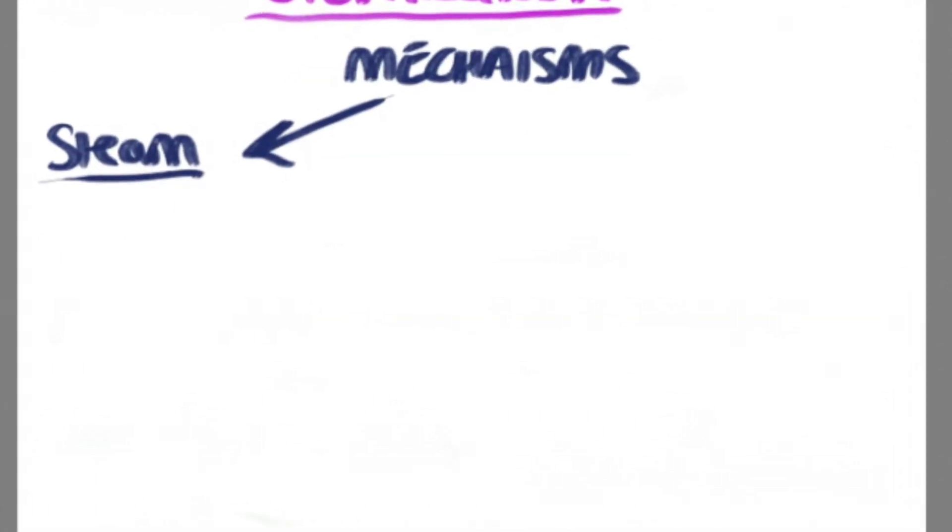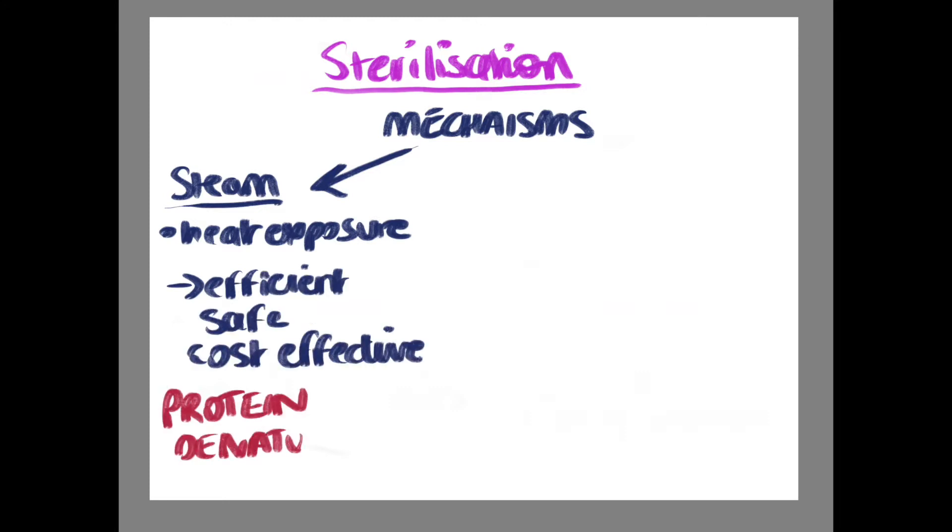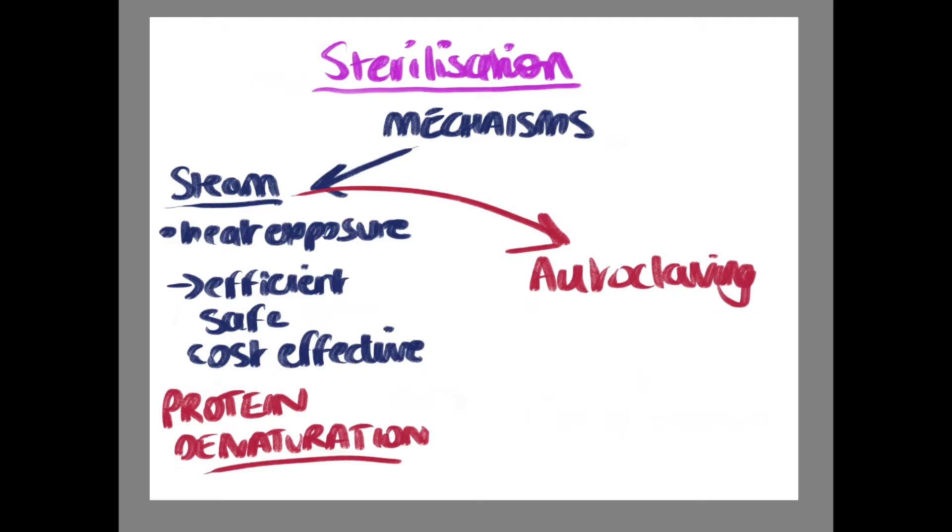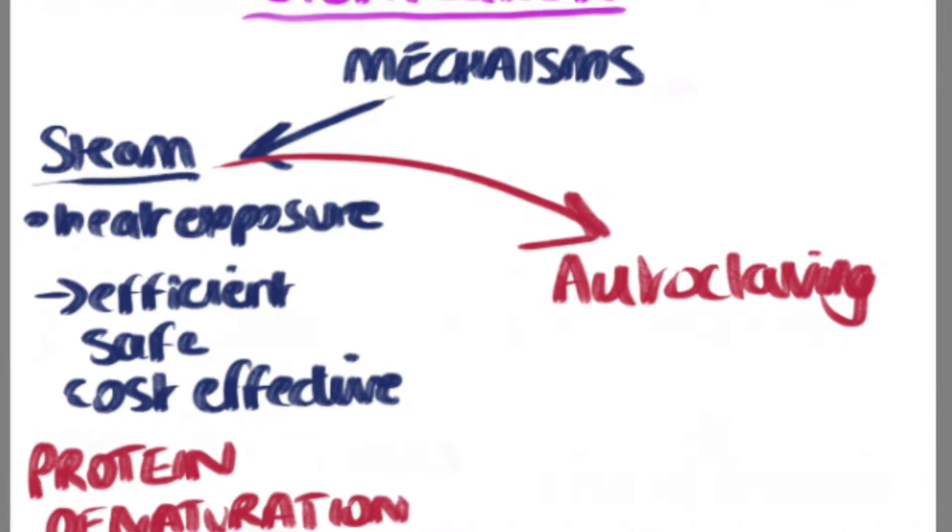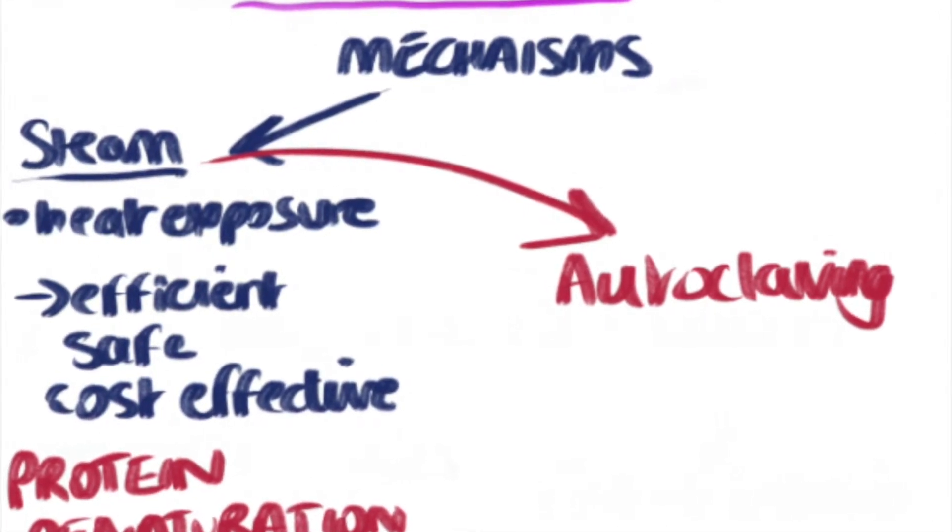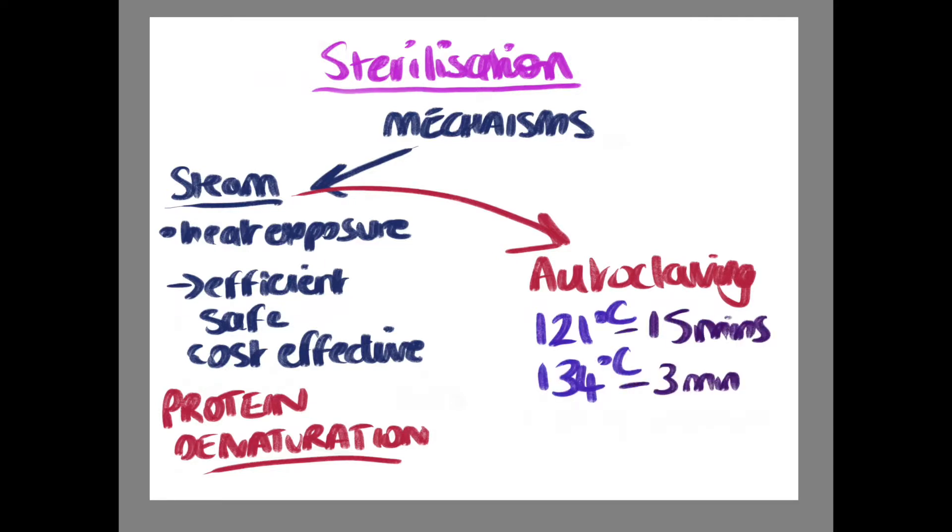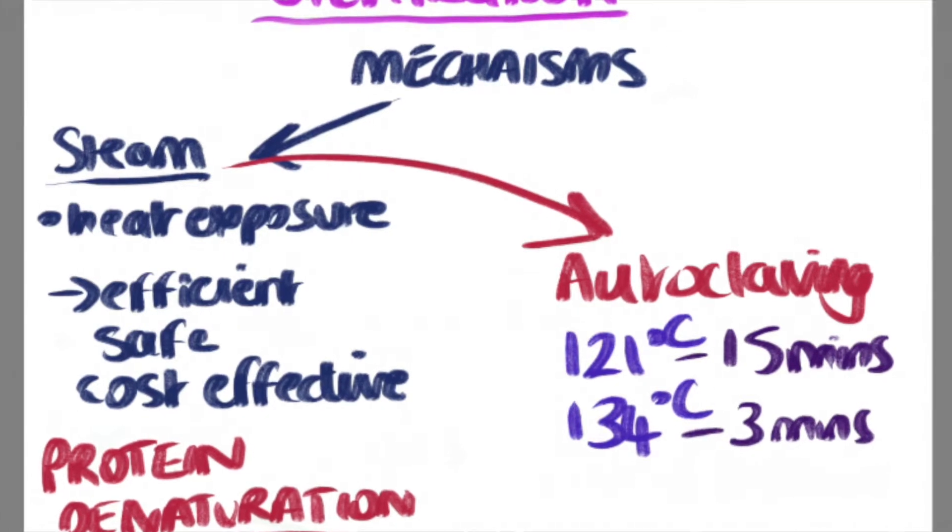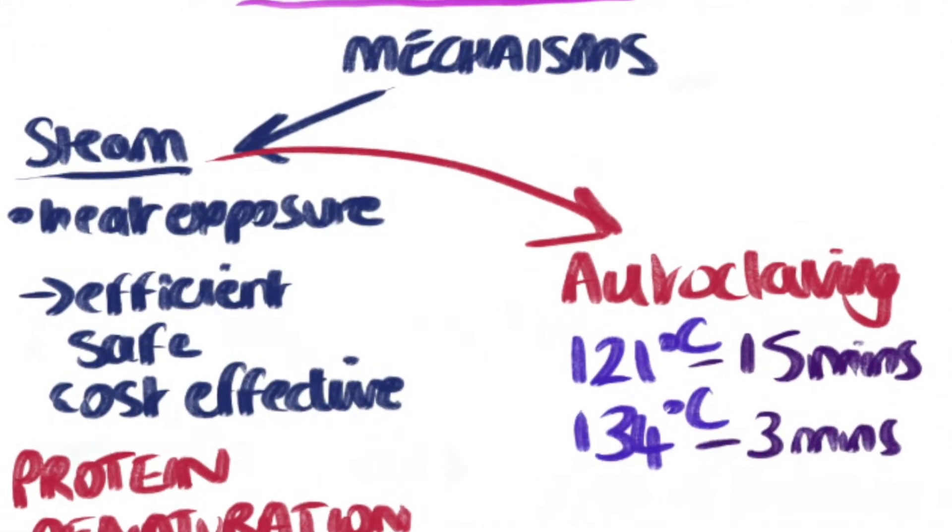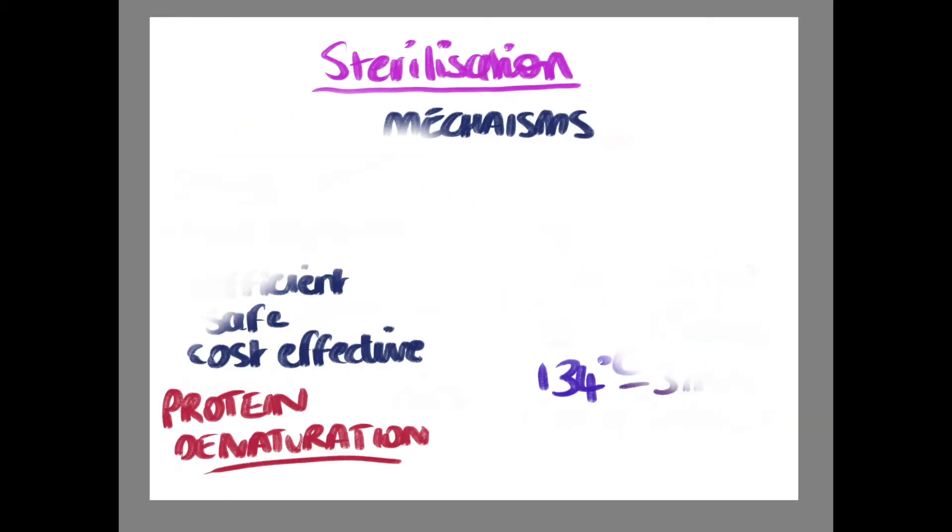Steam: If the equipment can withstand exposure to heat and moisture, then this is an efficient, safe and cost-effective method. Microorganisms are destroyed by protein denaturation. Autoclaving makes use of steam. This is essentially a pressure chamber which combines increased temperature and pressure for a certain time limit to achieve sterility. The most common temperatures are 121 and 134 degrees Celsius. The higher the temperature for a longer period increases the probability of sterility. The minimum cycle times for each temperature are 15 minutes and 3 minutes respectively.